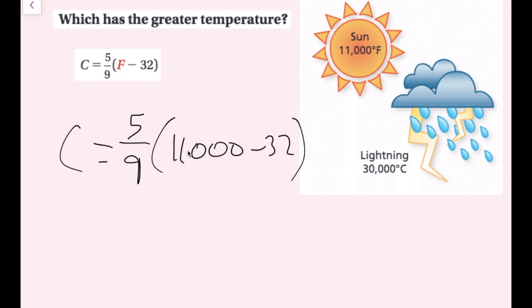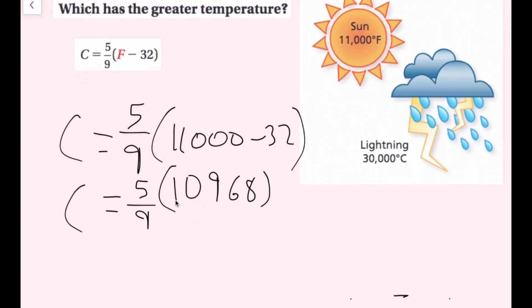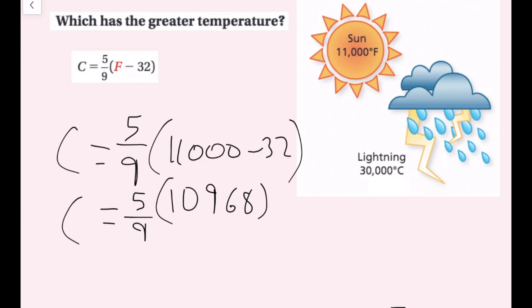Now, I'm going to do this out really quickly. 11,000 minus 32 is going to be 10,968 times five-ninths. And what I could do is I could multiply this out right here, five times 10,968, and then divide this whole thing by nine. But right away, I see that I am multiplying 10,968 by a fraction that is smaller than one. So five-ninths is smaller than one. So that means when I multiply this number by this number, this 10,968 is going to decrease. So I know for a fact that the sun's temperature in Celsius is going to be much less than 30,000 degrees Celsius. So I know that the sun has a lower temperature and the lightning has the greater temperature.